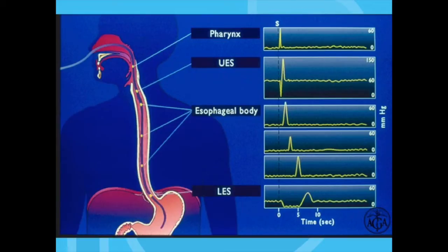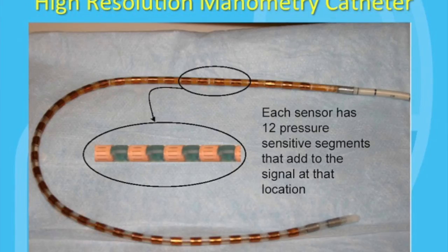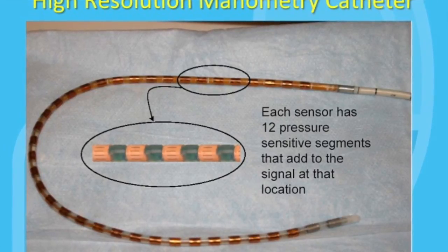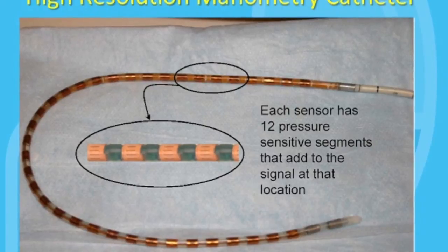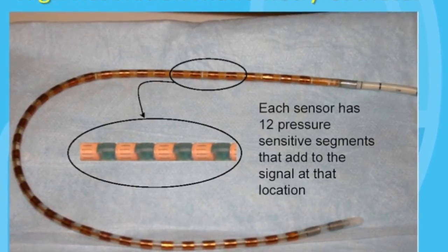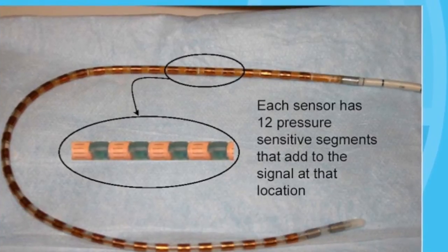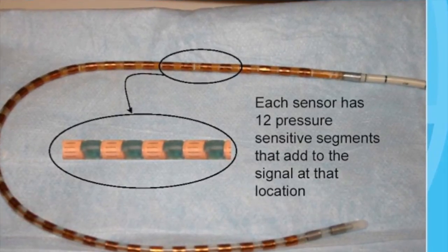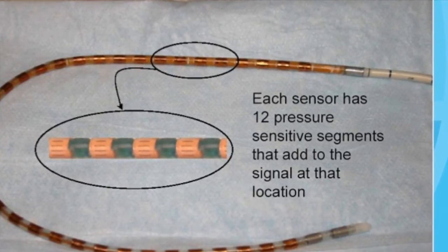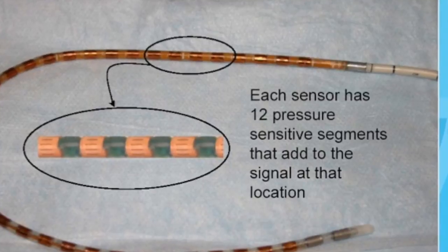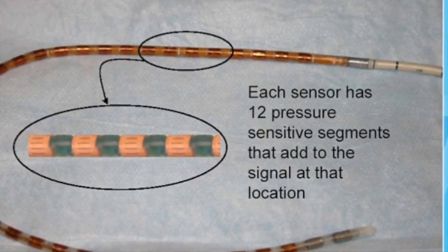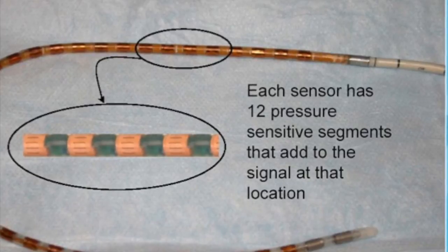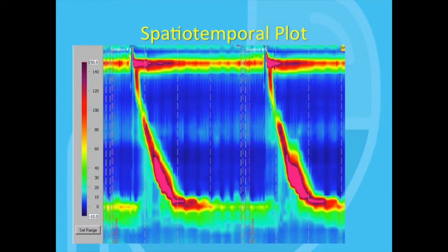You can see that there's actually a problem with this method in that there are large gaps between the pressure sensors, meaning that there's a lot of information about the pressure behavior in the esophagus that's missing. Fortunately, we now have high-resolution esophageal manometry. In this slide, you can see a modern esophageal pressure catheter that has 36 pressure sensors down its length. This generates a lot more data and a much more accurate description of the pressure behavior in the esophagus. The old pressure line graph has been replaced with a spatiotemporal plot.